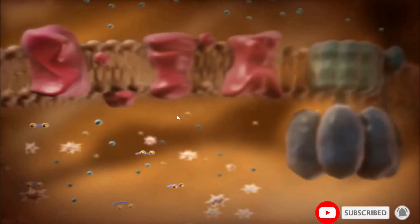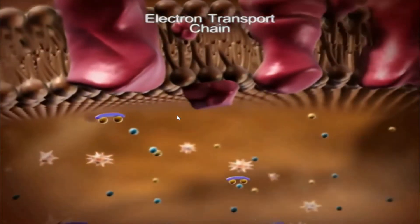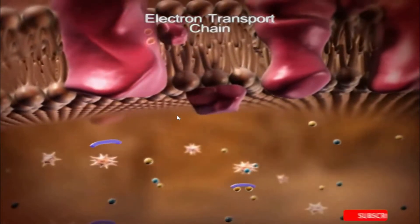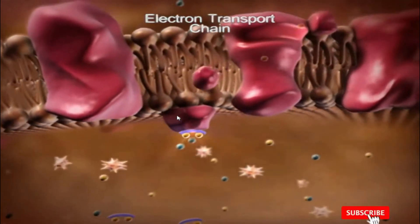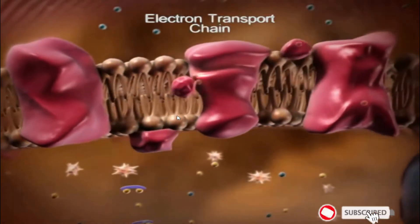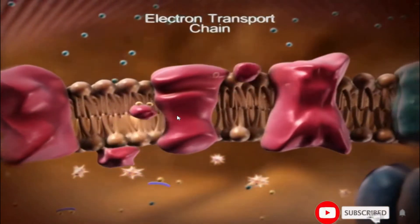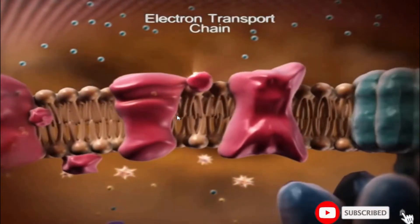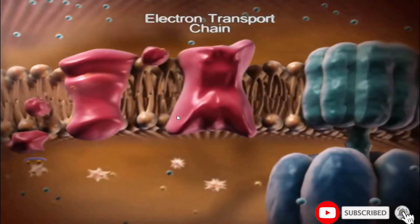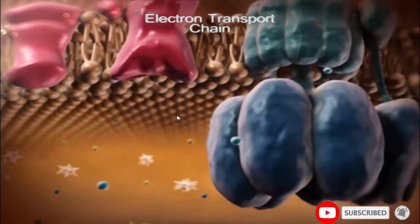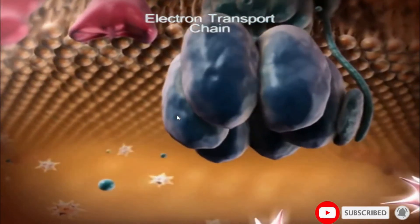The third and final step is the use of high-energy electrons in the electron transport chain, located in the mitochondrial membrane. It is during this phase that most of the ATP molecules are created. The previously released electrons interact with a series of enzymes that store the energy in the electrons in ATP molecules.